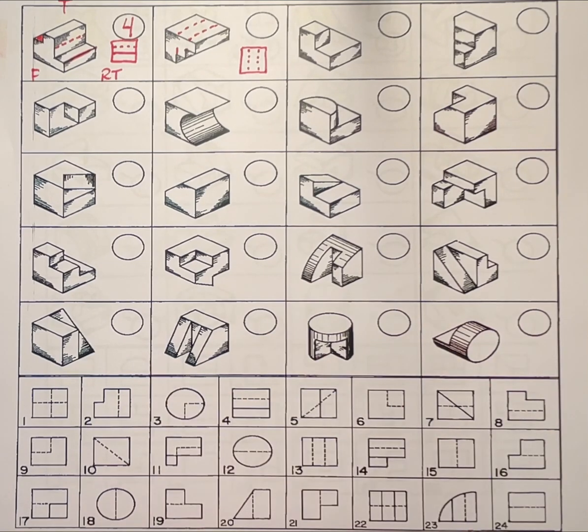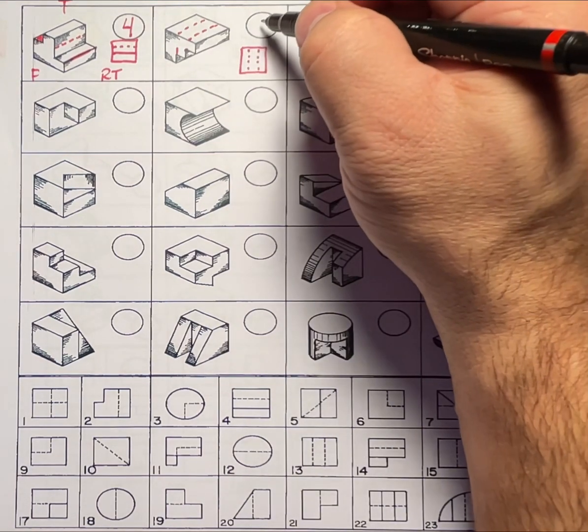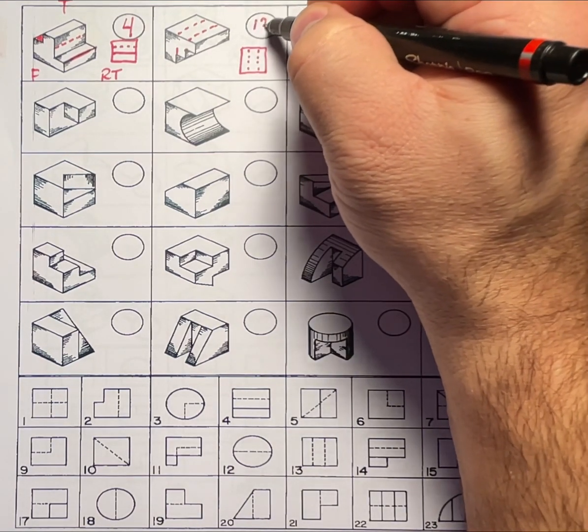Which one at the bottom matches my sketch? I can clearly see that number 13 is a match for my sketch. So this one happened to be in the top view and I will put a number 13 in the circle.